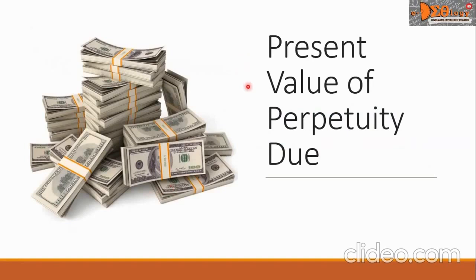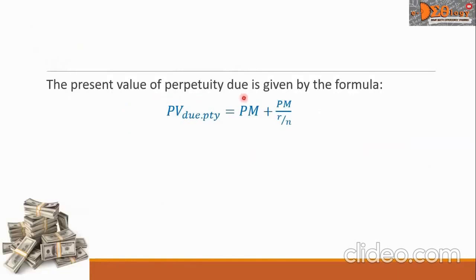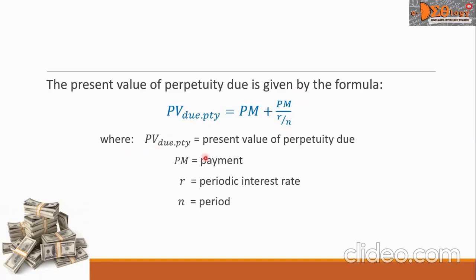Let us now discuss the present value of Perpetuity Due. The present value of Perpetuity Due is given by the formula: PV sub Perpetuity Due equals PM plus a complex fraction where the numerator is PM and the denominator is R over N. Here, PV means the present value of Perpetuity Due, PM means payment, R is the periodic interest rate, and N is the period.